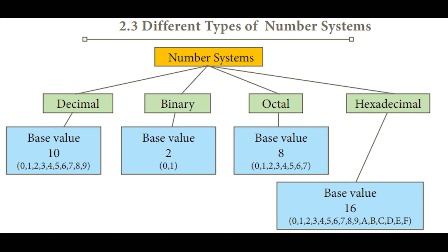Octal has a base value of 8 and octal numbers are 0, 1, 2, 3, 4, 5, 6, 7 — only till 7. From 0 to 7, the total number of terms is 8, so the base value is 8 and the octal numbers are 0 to 7. After 7, we don't have 8 and 9 in octal, so it will again start as 10, 11, and like that.